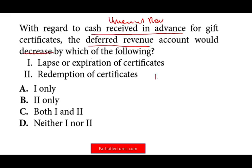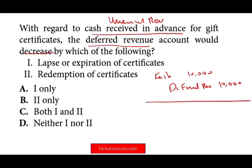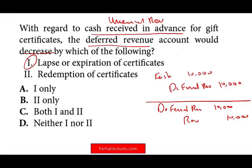Let's assume we sold $10,000 of gift certificates — debit cash $10,000, credit deferred revenue $10,000. If none of the people who purchased the gift certificates came back and redeemed them after three months, we debit the deferred revenue $10,000 and turn it into revenue, because they lapsed or expired. Therefore one is correct, so we can take out B and D. Is number two — redemption of certificate — also correct? If they redeem the certificate, we debit deferred revenue and credit revenue. So one and two are correct — the answer is C.